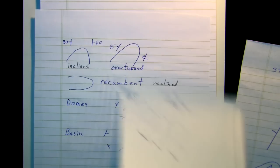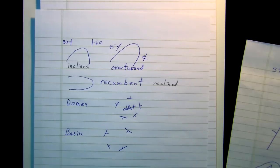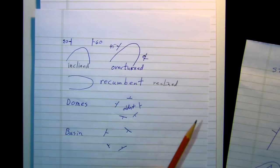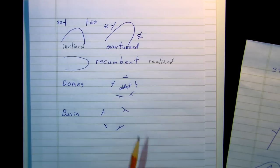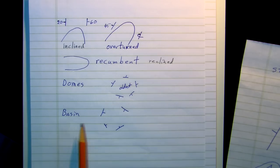The next thing I wish to discuss are domes and basins. A dome would be like the dome of a church. Here we have the dips all pointing outward. And the rocks at the center of the dome are the oldest. These are good places to look for oil and natural gas. Here we have a basin. It's like a bowl where all the dips are pointing inward.